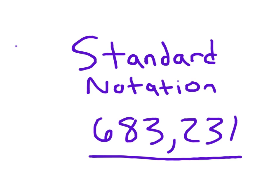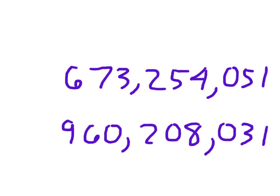We're going to read some numbers on the next slide, and then get right to our expanded notation. Go ahead and read these numbers for us: 673,254,051 and 960,208,031. Now, what is this 7 worth? What is this 7 worth? This is hugely important with expanded notation.